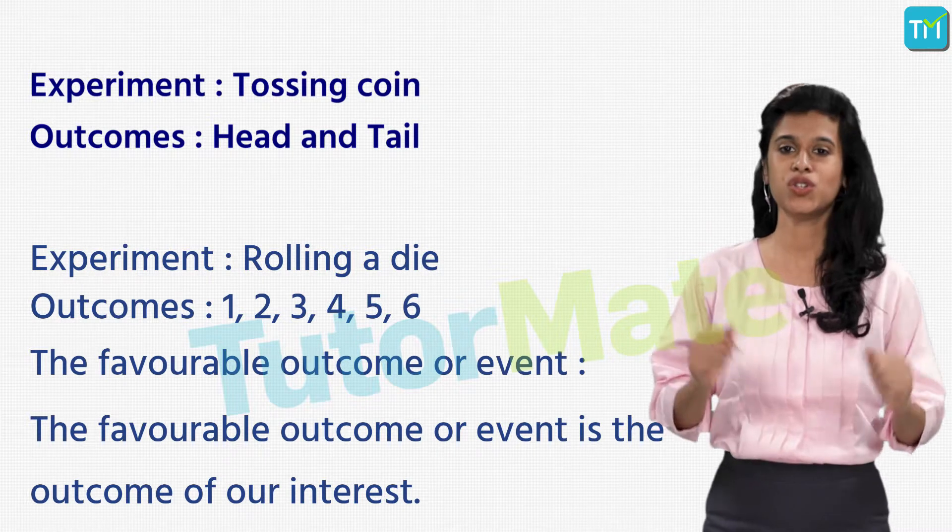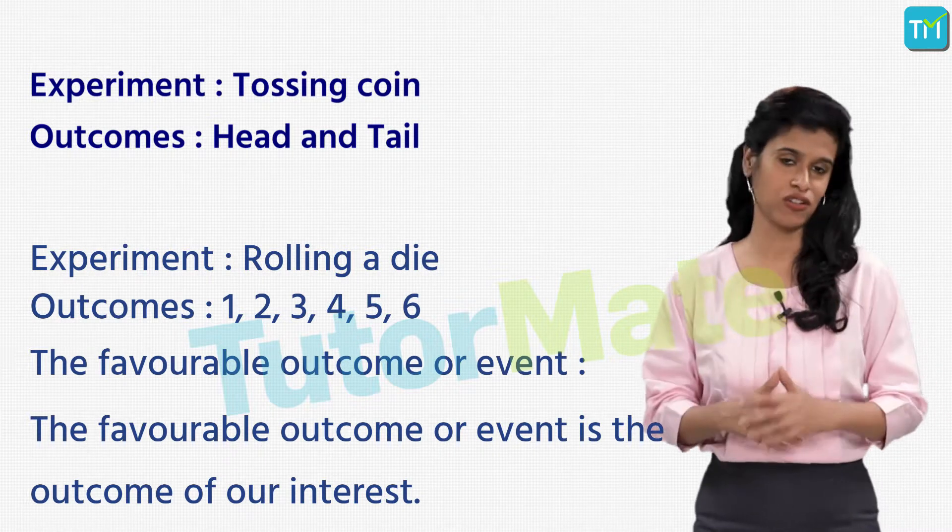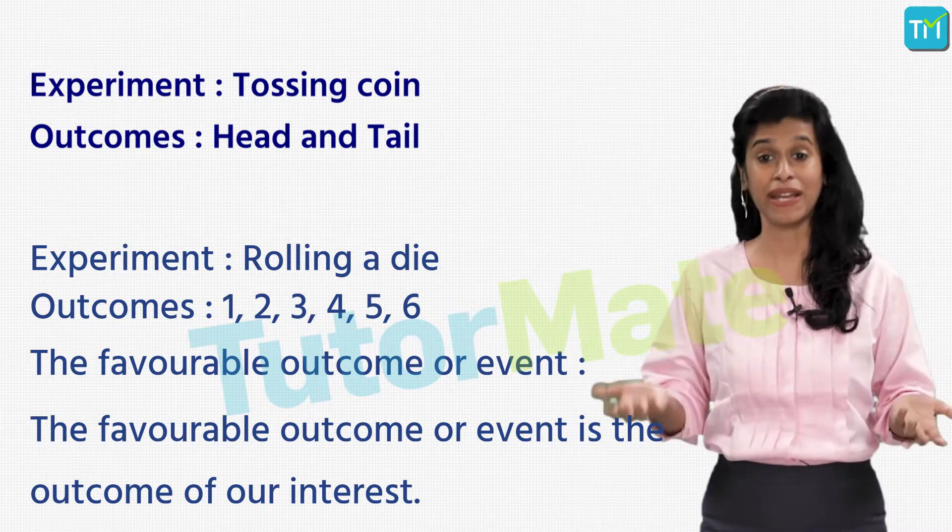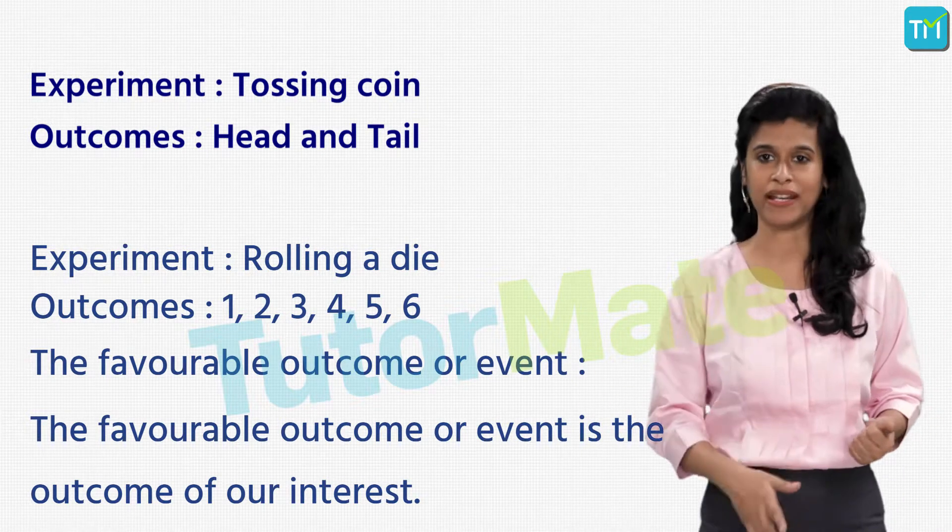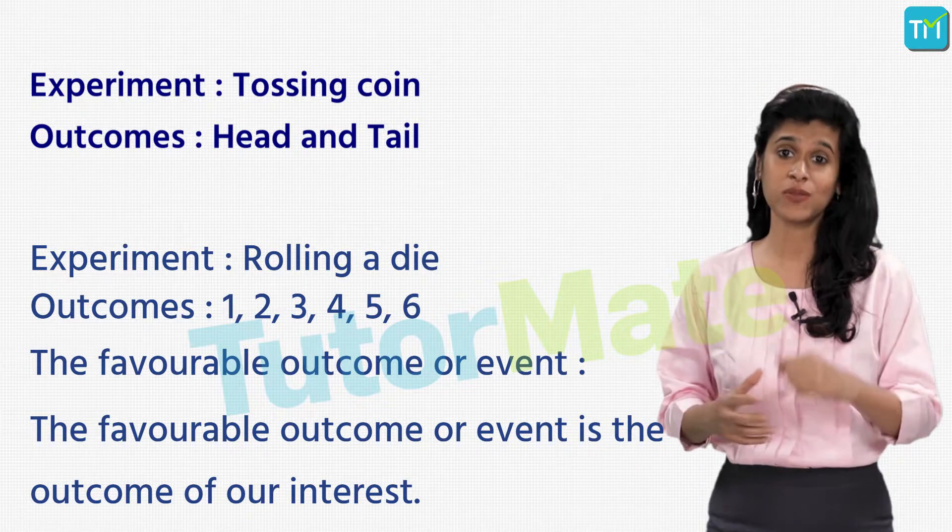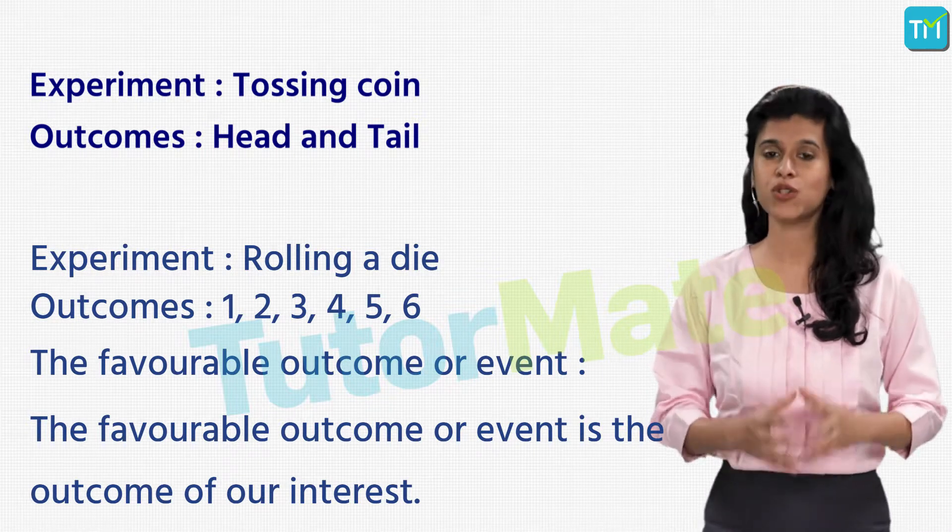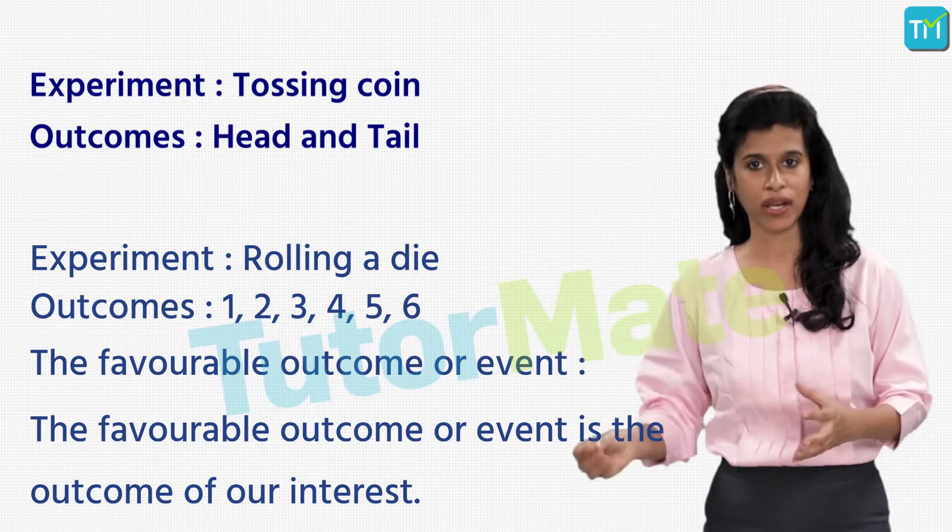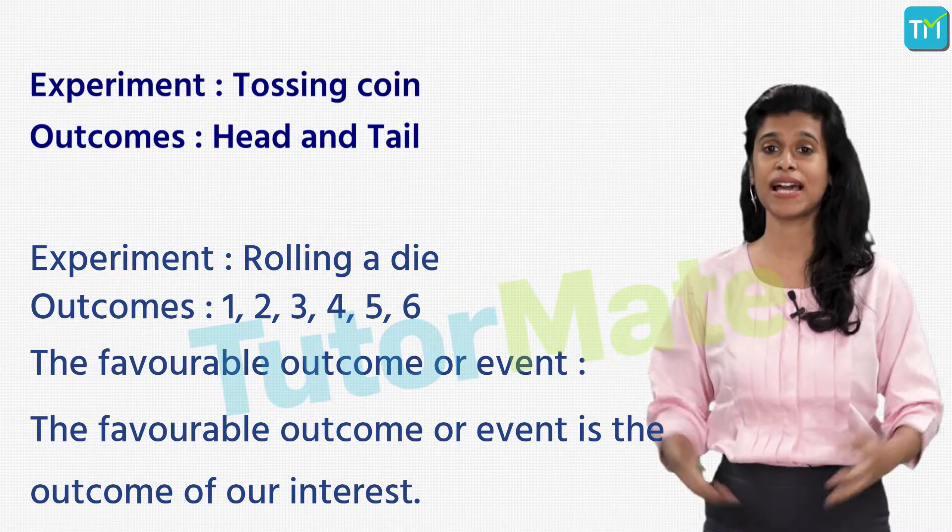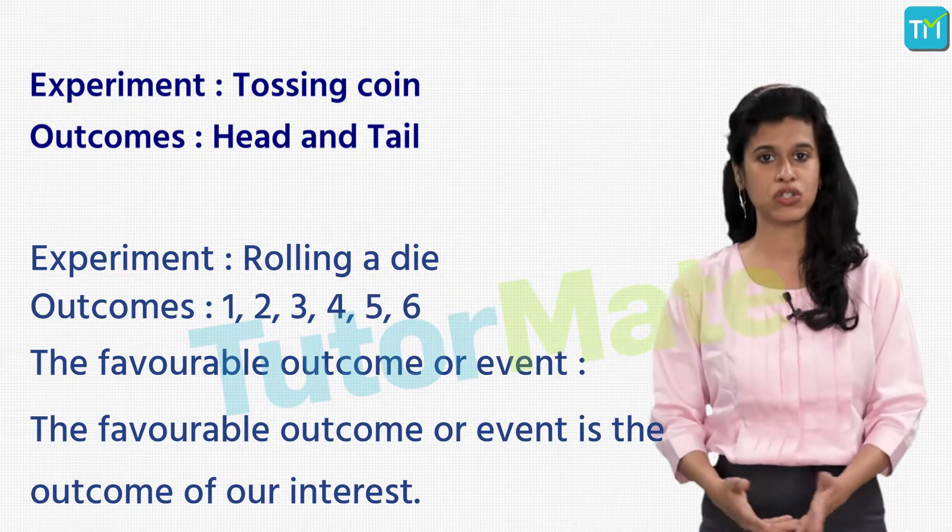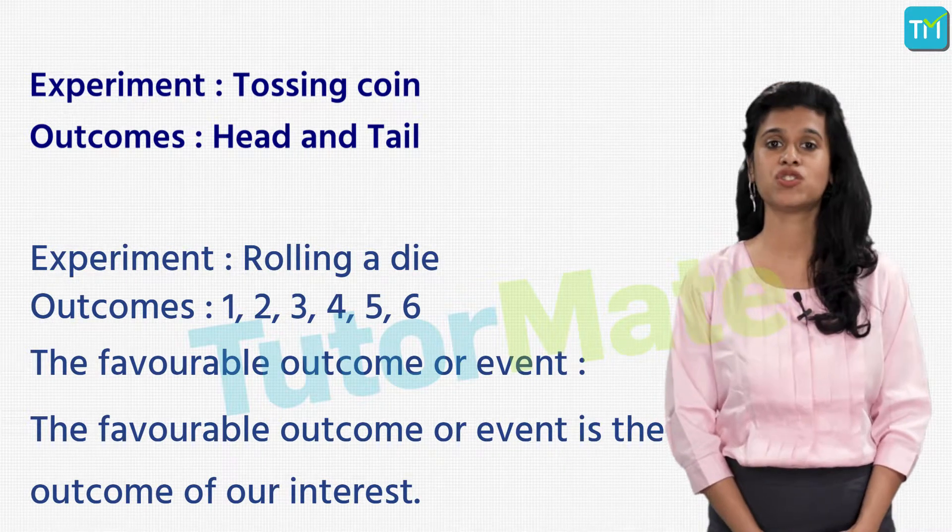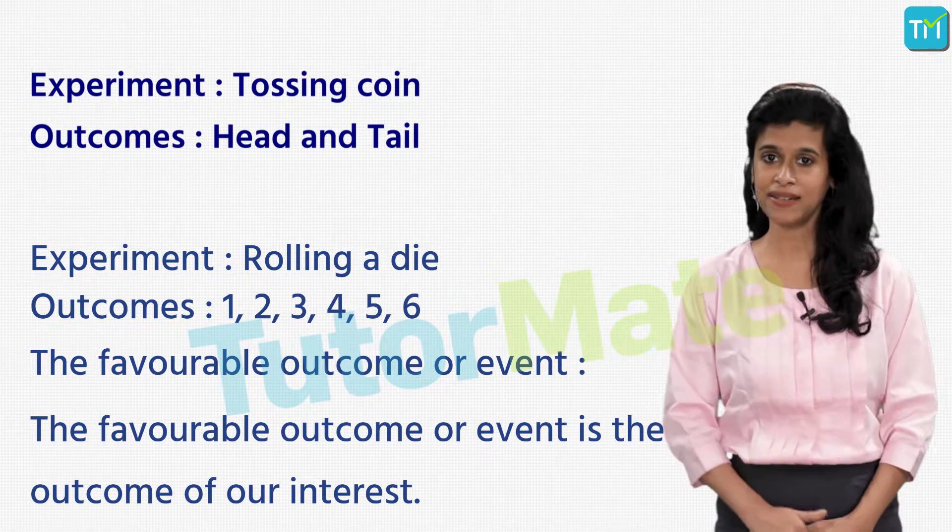Suppose you and your friend have to work together on a project. Now one of you has to draw and the other one has to paint. Let's say you hate painting and instead want to draw, but even your friend wants to draw and not paint. In this case, you both decide to toss a coin to come to a fair conclusion. And so you decide that if the coin shows a head, you will draw and your friend will paint. On the other hand, if it shows a tail, you will have to paint while your friend will draw.